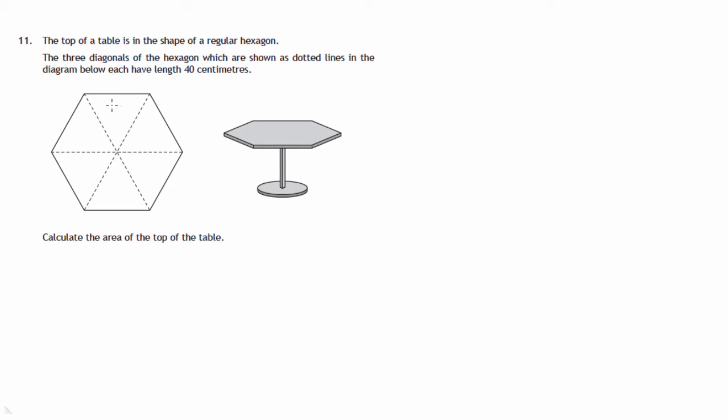It consists, as you'll see, of six equilateral triangles because the dotted lines are the three diagonals of that regular hexagon that's shown. And we're asked to calculate the area of the top of the table if we know that the length of one of these diagonals is 40 centimetres.